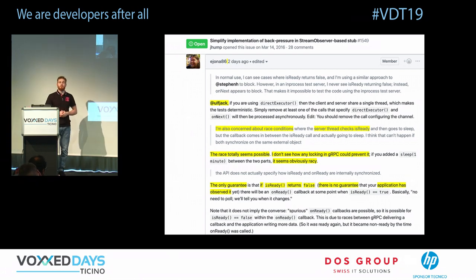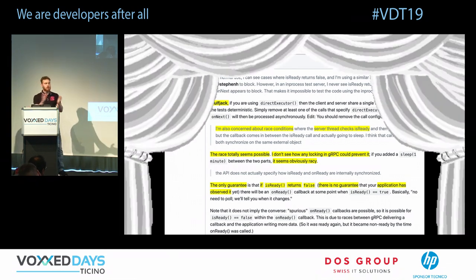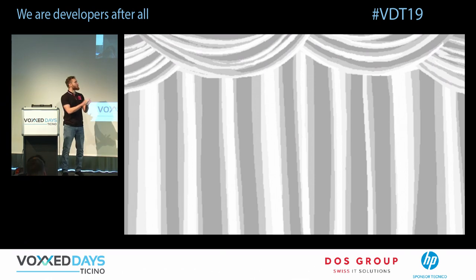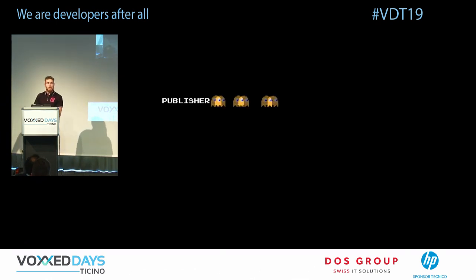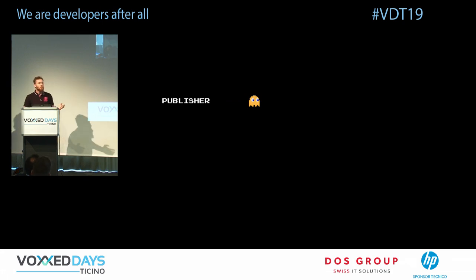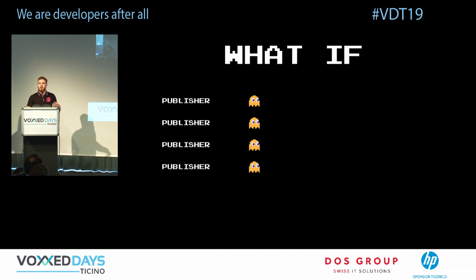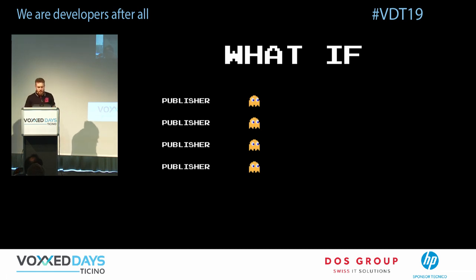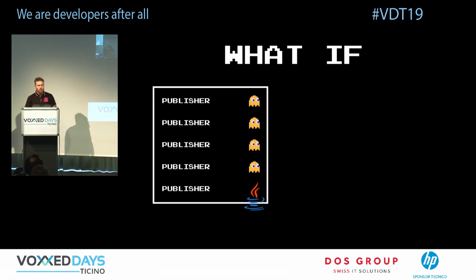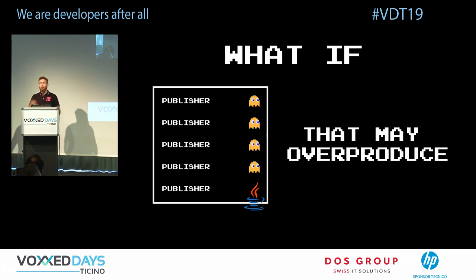The only guarantee if the 'isReady' field is false is that there's no guarantee your application has already observed it. So gRPC can overproduce a few elements. For a single publisher that might not be a big problem, but imagine a thousand simultaneous streams to different recipients.